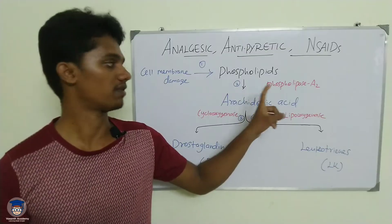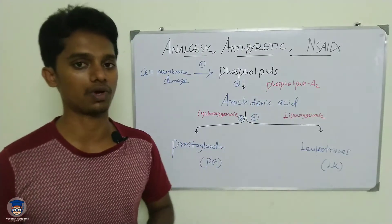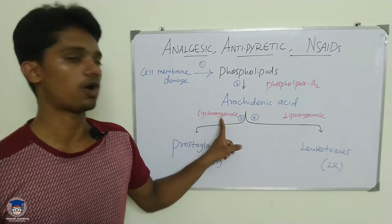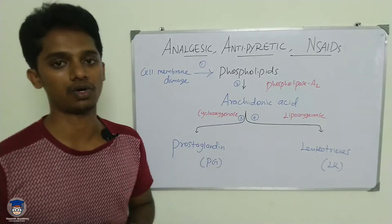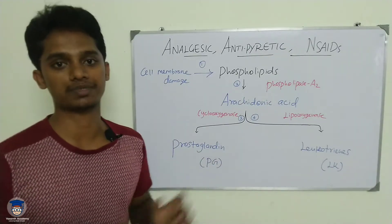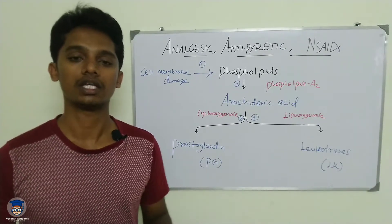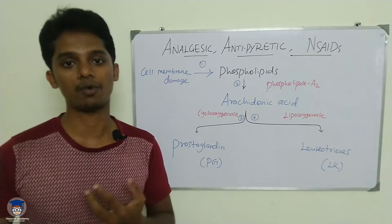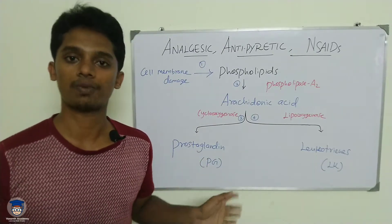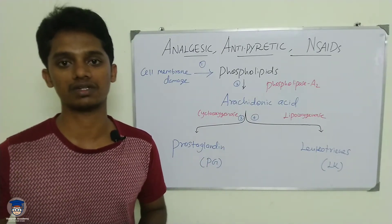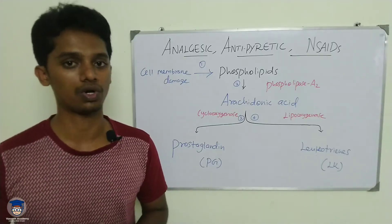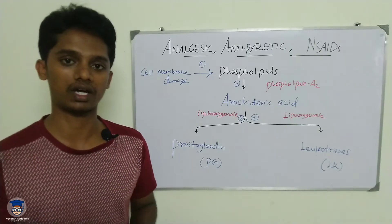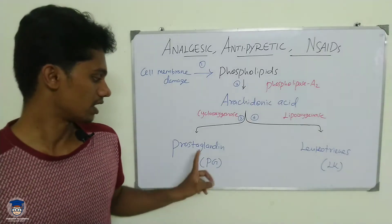When arachidonic acid is released, an enzyme called cyclooxygenase acts on it and produces a substance called prostaglandin. Prostaglandin is also called autocoid. Prostaglandin is the substance responsible for causing pain and inflammation in the body. Most drugs will target and affect prostaglandin to reduce pain and inflammation.